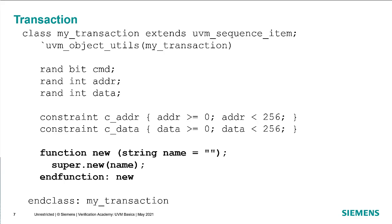The constructor of a data object is similar to that of a component in that it always has the same form. Every time you create a data object, you use this constructor. It only has one argument — a name — because data objects are not part of the component hierarchy, so the idea of a parent argument isn't necessary. An object is a little simpler than a component because it doesn't have the parent.